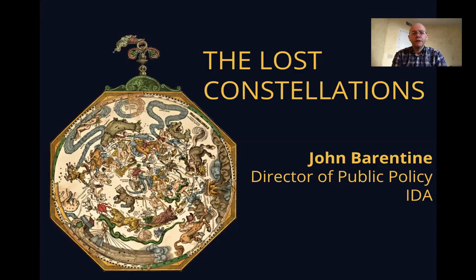One of my ongoing research interests is the history of astronomy, which brought me to a subject I will be talking to you about over the next several days. I've published two books on the history of the constellations, and in particular a subset of constellations that no longer appears on star charts. These lost constellations tell us much about how our modern night sky came to be, and their gradual disappearance through history relates in a particular way to dark skies. Yet they can still be seen if you know just where to look. We'll start today with an overview of the lost constellations, and on the days that follow we'll look at seven examples. In each case, I will show you a finder chart so that you can try to locate these oddities of astronomical history for yourself.